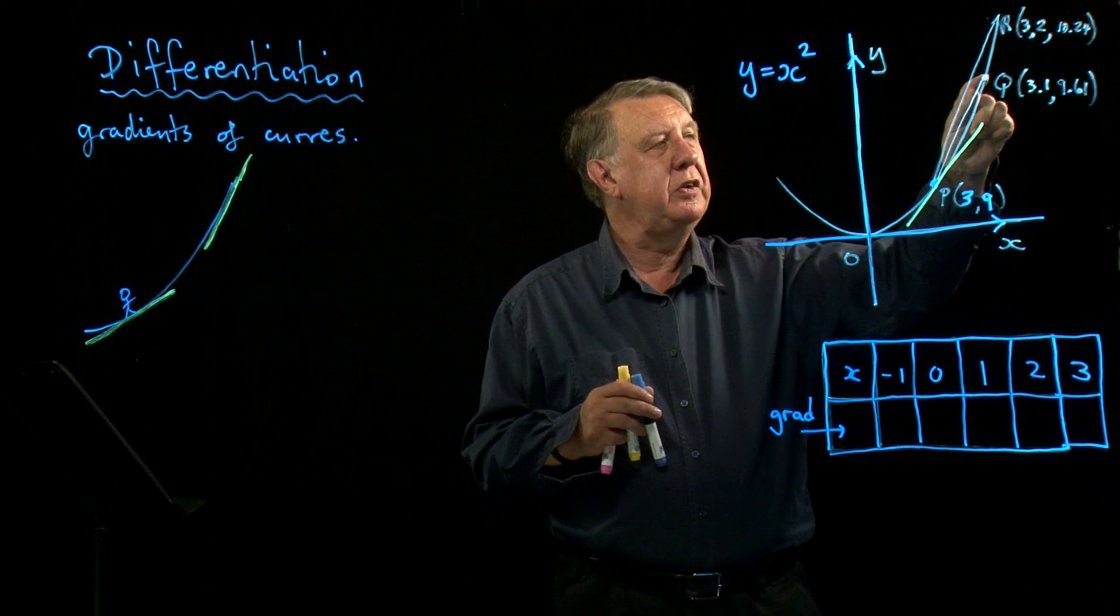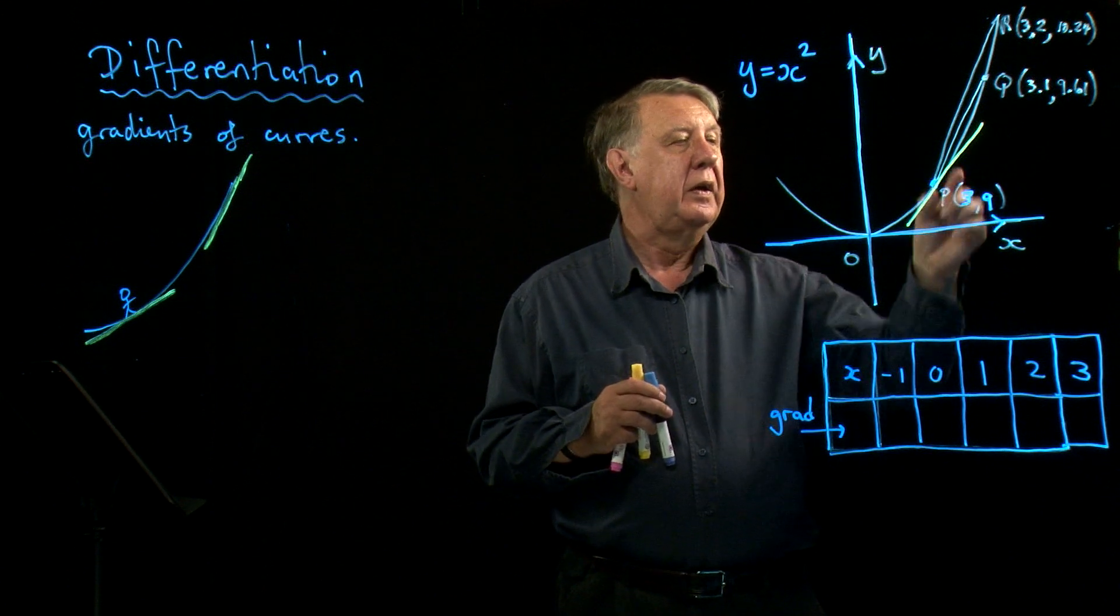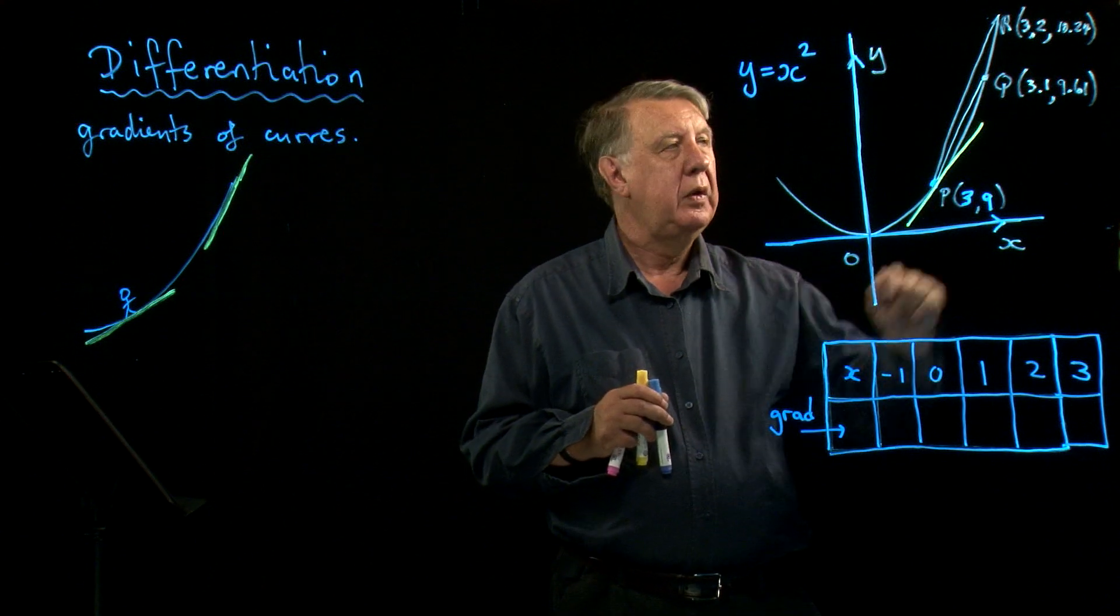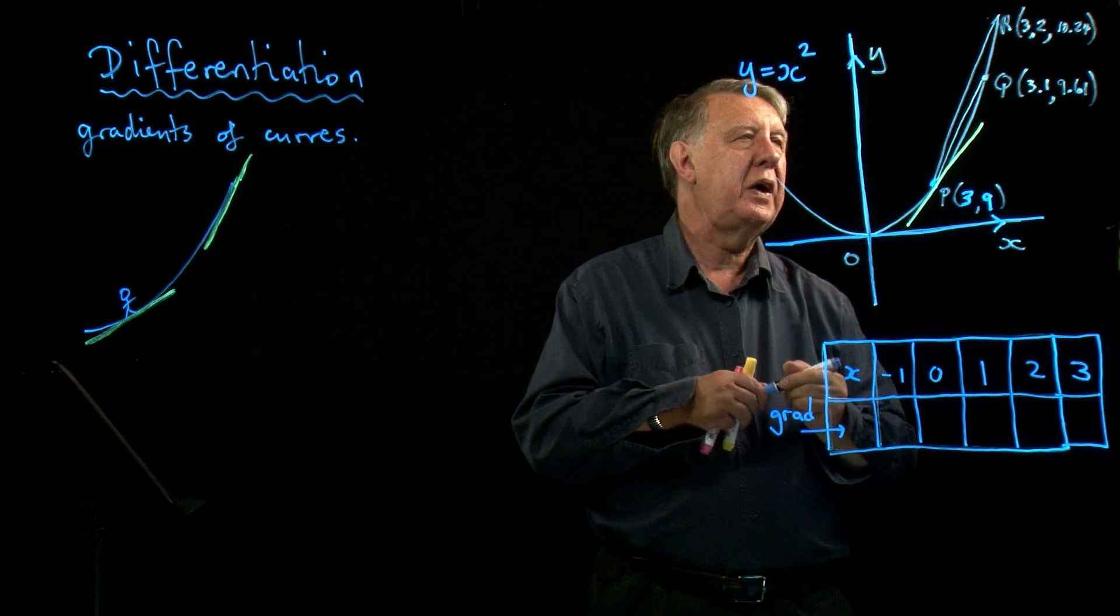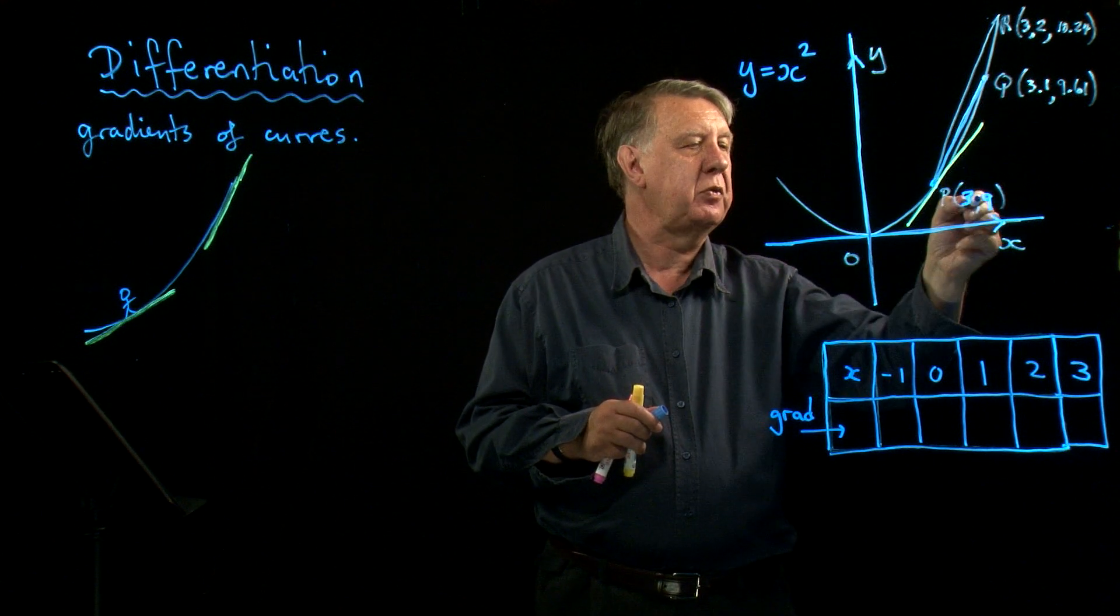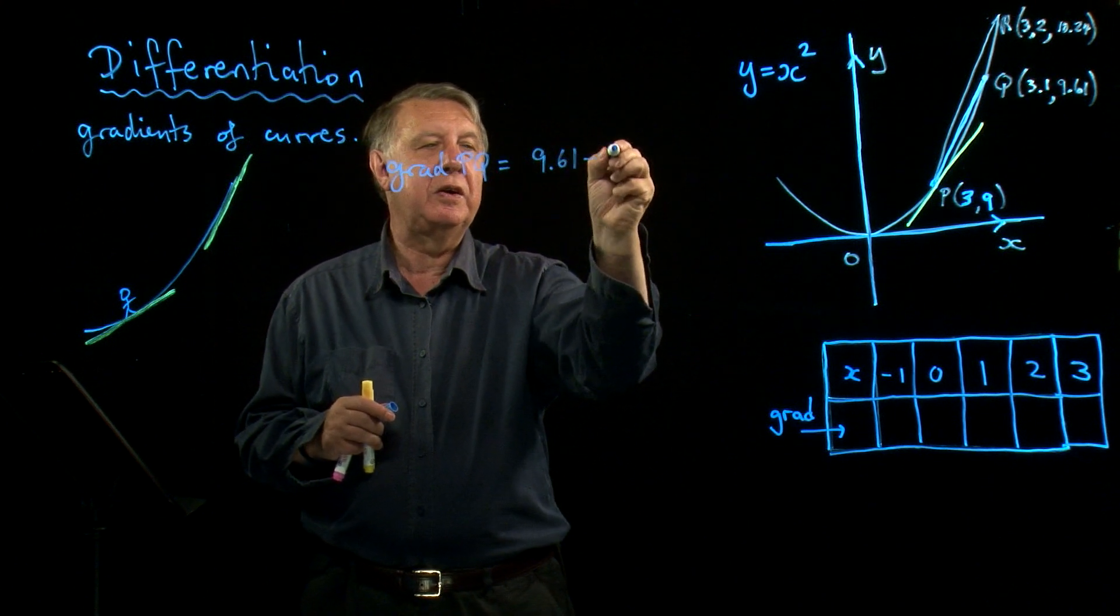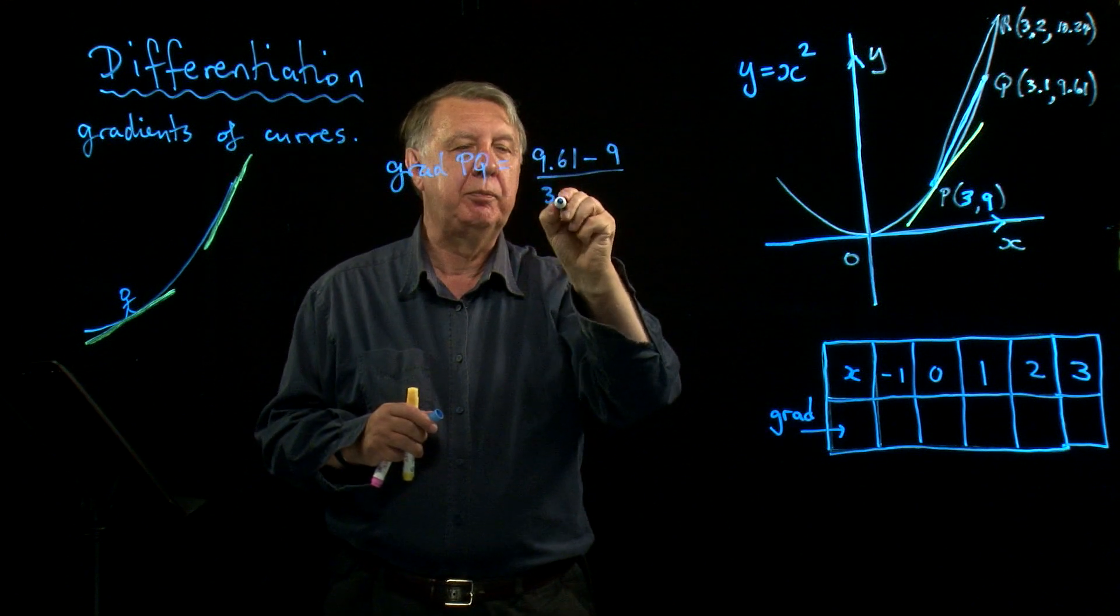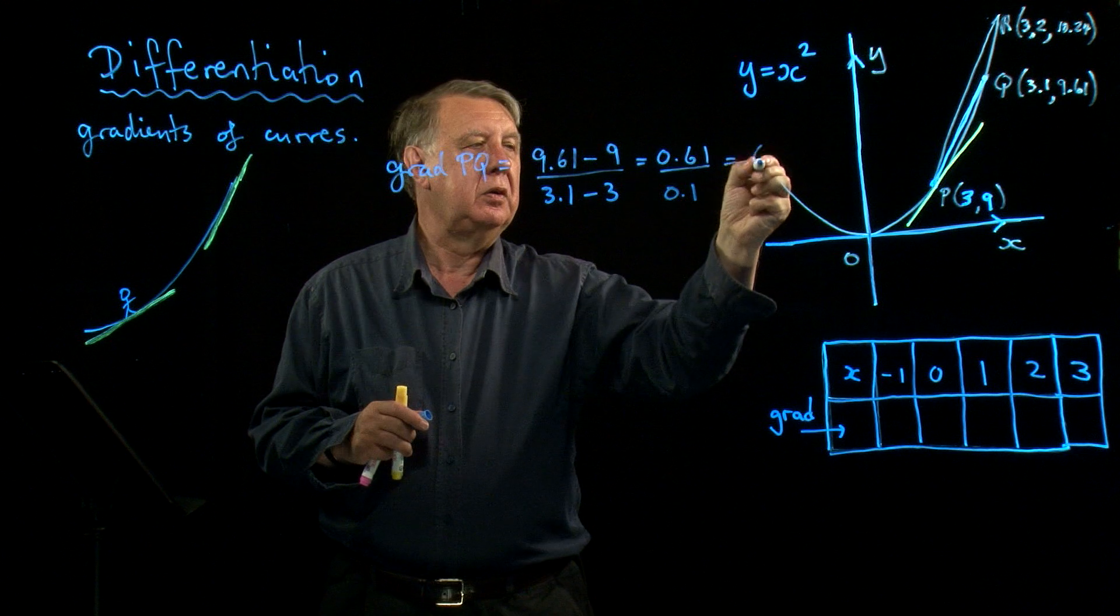Now we can't draw close together on a screen like this, so we've got to pretend that we are close to this point P. So when I get to Q, you need to imagine that these two points are actually very close together. And if you look at the numbers I've used here, x is actually only 3.1. So this whole diagram here is an exaggerated version of what's going on very close to this point. So if x is 3.1, by squaring 3.1, then y will be 9.61. So the gradient of the line PQ will be the difference in y, which is 9.61 take away 9, divided by the difference in the x coordinates, which is 3.1 take away 3.